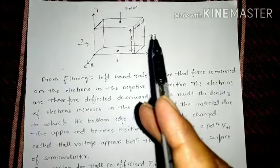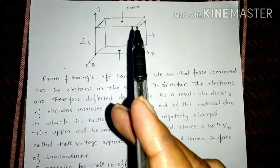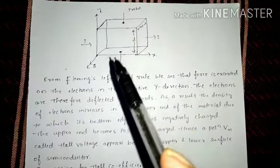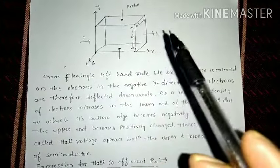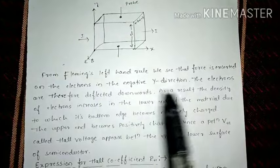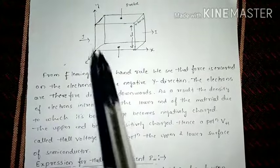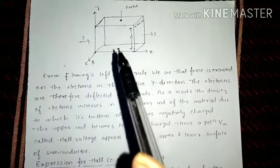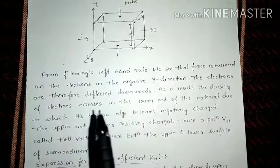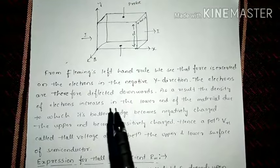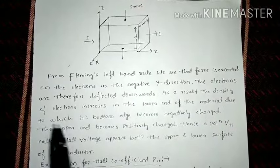The Lorentz force is applied in the downward direction, along the negative Y axis. The electrons are therefore deflected downwards, and they accumulate in the lower base of the semiconducting material. As a result, the density of electrons increases in the lower end of the material.